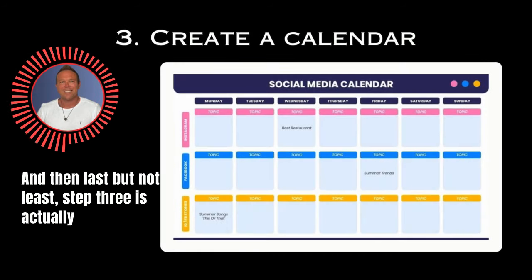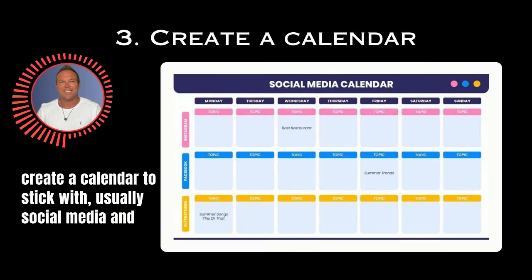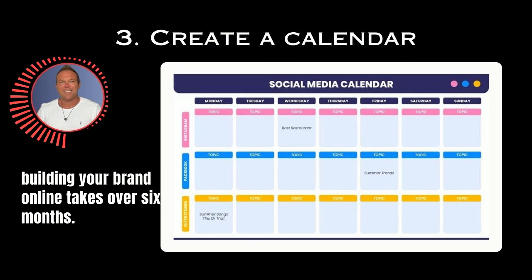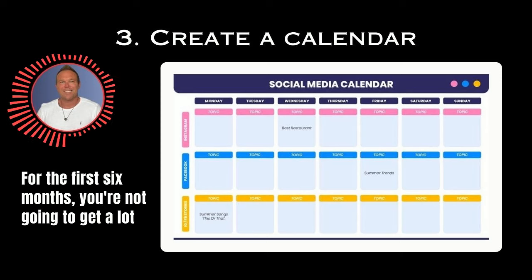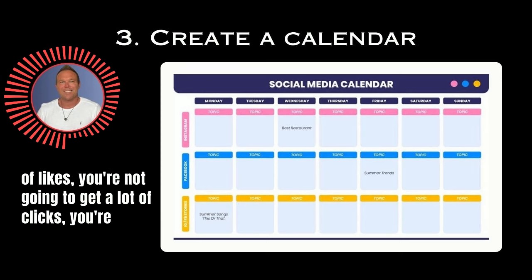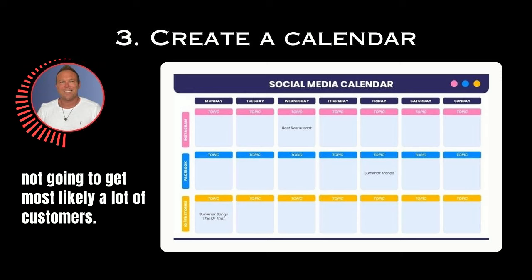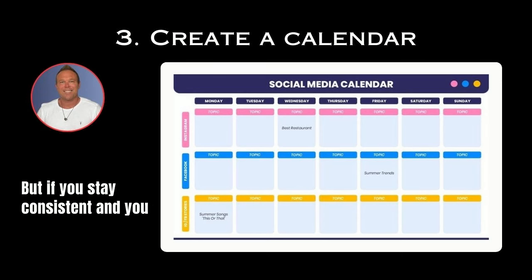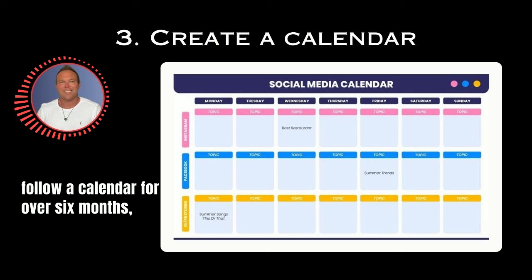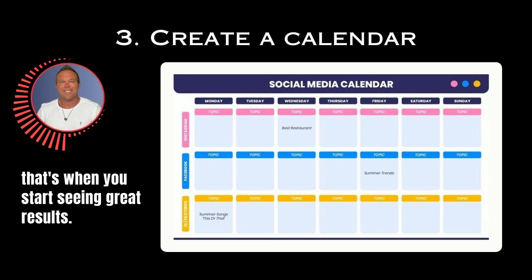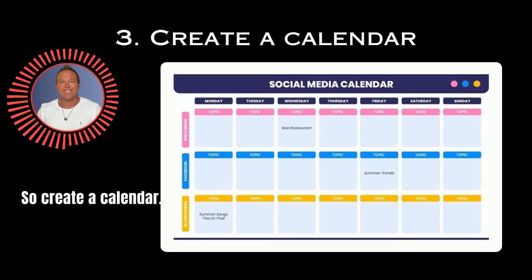Last but not least, step three is to actually create a calendar to stick with. Usually social media and building your brand online takes over six months. For the first six months, you're not going to get a lot of likes, you're not going to get a lot of clicks, and you're most likely not going to get a lot of customers. But if you stay consistent and you follow a calendar for over six months, that's when you start seeing great results.